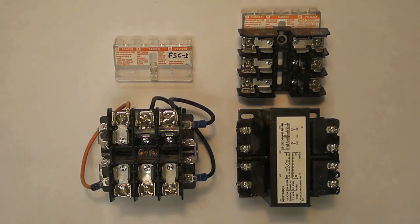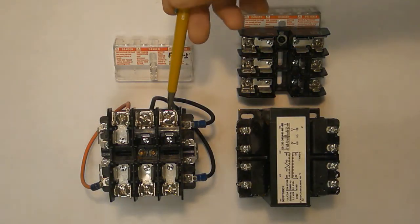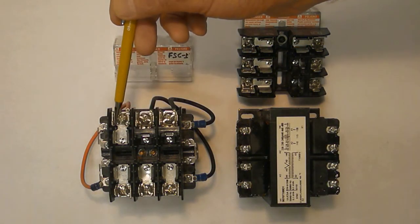This is a top view of 9070 class T and TF type industrial control transformers. The one on the left is a TF type with a factory installed fuse block, which has provisions for two primary and one secondary fuse.